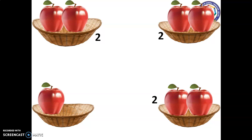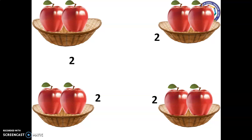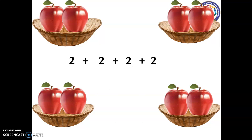In the fourth basket — one, two — we have two fruits in the fourth basket. To get the total number of fruits, we add the number of fruits in the four baskets. That is two plus two plus two plus two equals eight.